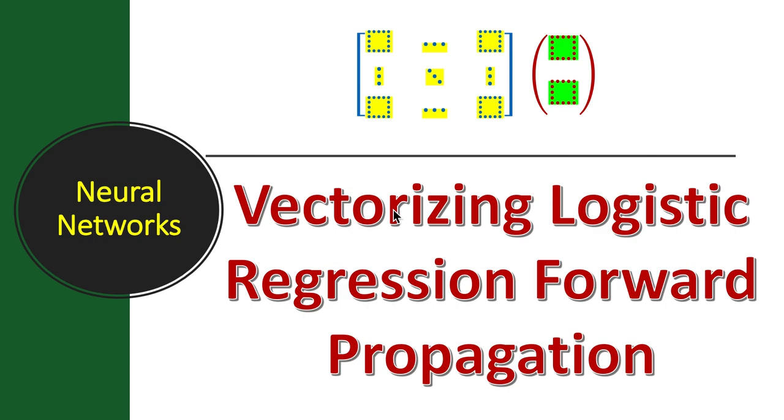First of all we will see how to vectorize the forward propagation step of logistic regression and just a brief recap neural network calculations can be divided into two parts. One is forward propagation where we calculate the values of different values and then after we have computed a final target value we back propagate that is we come backwards one step at a time.